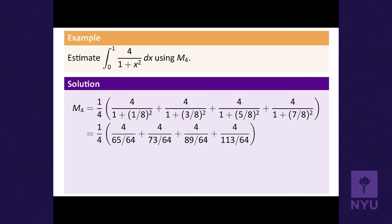Everything is a fraction, so we can get it as a single numerator over denominator. Working through the arithmetic: the denominators give us 65/64, 73/64, 89/64, and 113/64, leading to expressions like 64/65 + 64/73 + 64/89 + 64/113, which is some fraction approximating this integral.